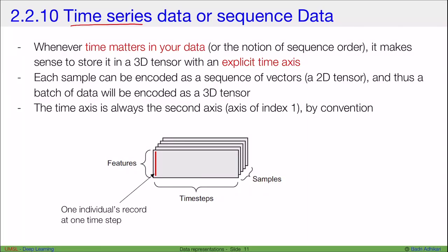Now let's look at some examples of time series data, also known as sequence data. Whenever time matters in your data or the notion of sequence order, it makes sense to store it in a 3D tensor with an explicit time axis.